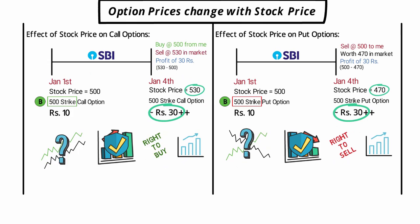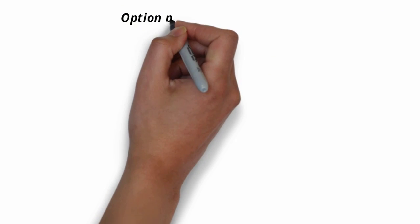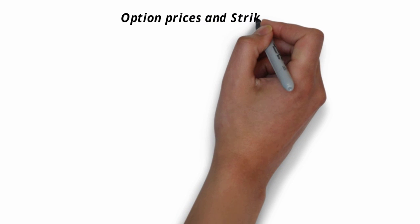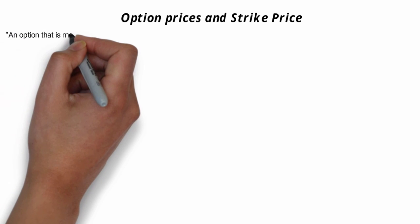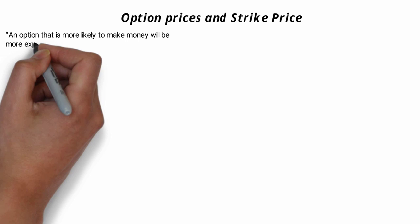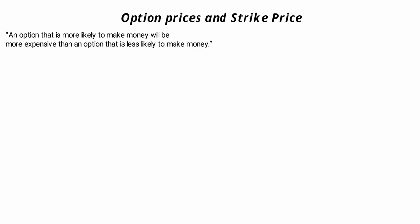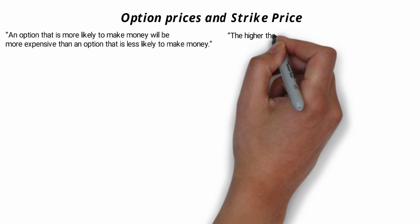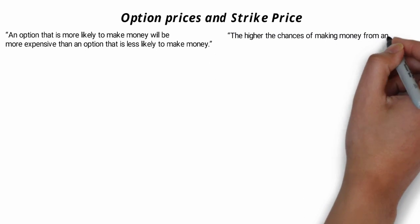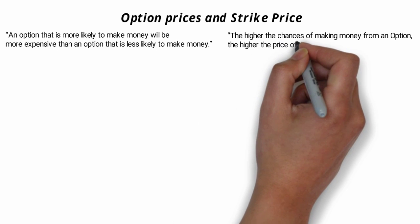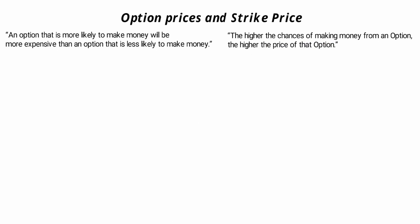Now let's understand how option prices change with respect to strike price. Before we get into that, let me state two obvious facts. Number one: an option that is more likely to make money will be more expensive than an option that is less likely to make money. Number two: the higher the chance of making money from an option, the higher the price of that option.